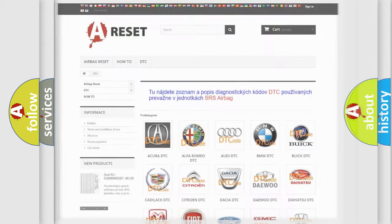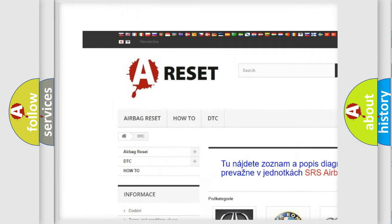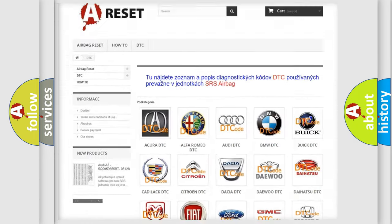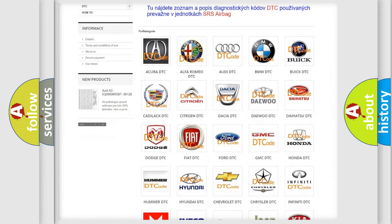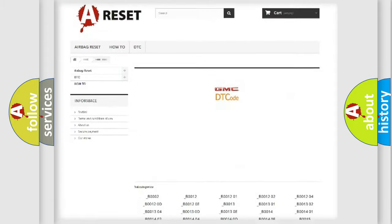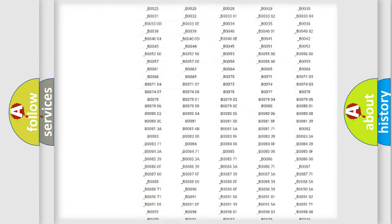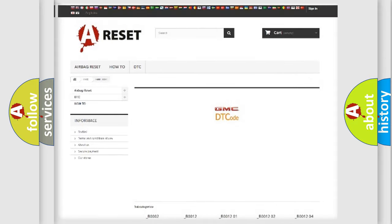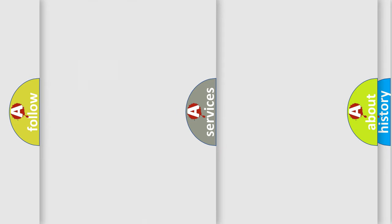Our website airbagreset.sk produces useful videos for you. You do not have to go through the OBD2 protocol anymore to know how to troubleshoot any car breakdown. You will find all the diagnostic codes that can be diagnosed in GMC vehicles, and also many other useful things.